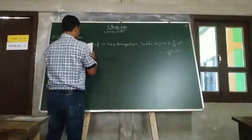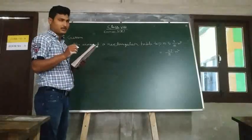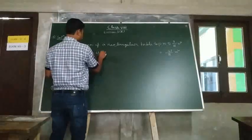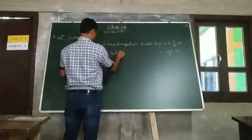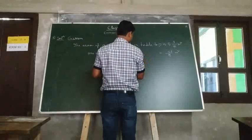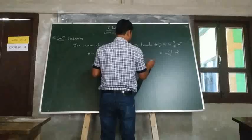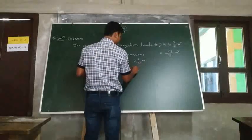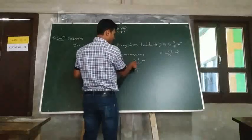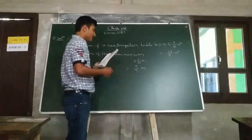Also, we are given one of the sides measures 2 and 1/4 meter. This is also in mixed fraction form, so we have to convert it into an improper fraction. 2 times 4 is 8, 8 plus 1 is 9, so we get 9/4 meter.